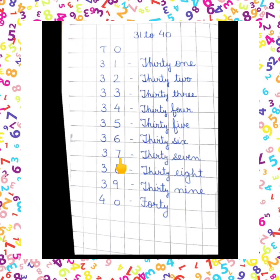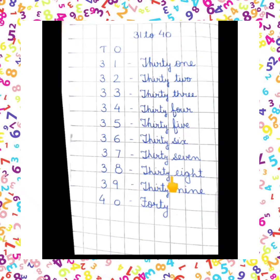37: THIRTY (T-H-I-R-T-Y) + SEVEN (S-E-V-E-N) = 37. 38: THIRTY (T-H-I-R-T-Y) + EIGHT (E-I-G-H-T) = 38.